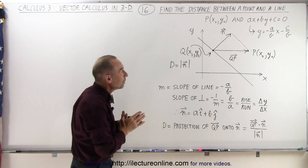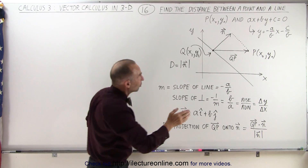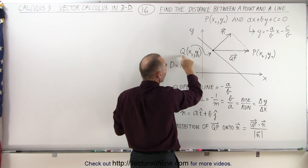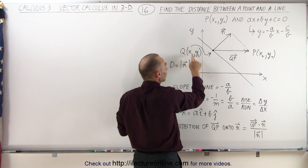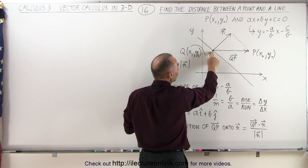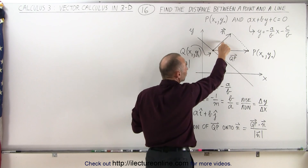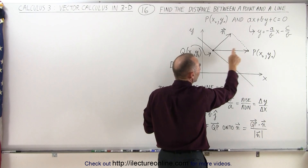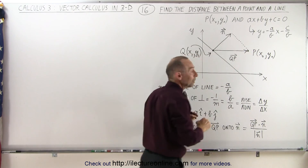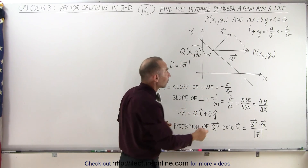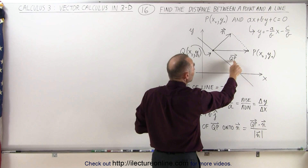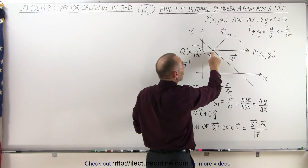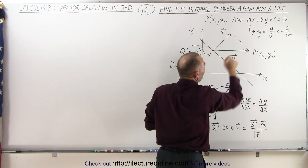What we're going to do is project a vector drawn from some arbitrary point on the line — let's call it point Q, defined as X1, Y1 — which is the start of the normal vector. Then we draw a second vector from this point Q to our arbitrary point P away from the line, and we call that vector QP, starting at Q and ending at P.